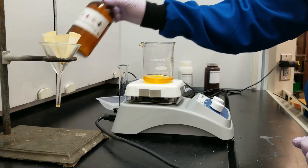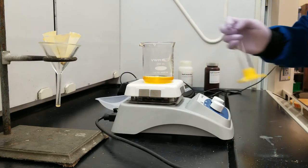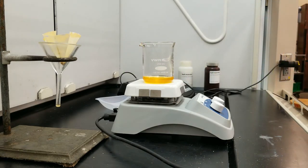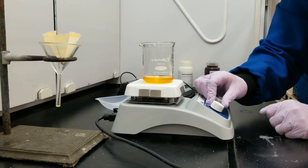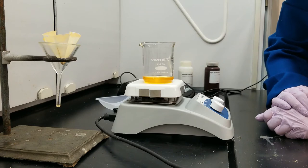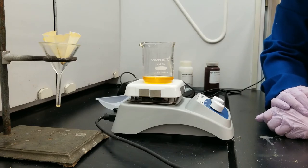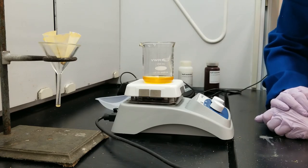Also, because hexane is very volatile, I'm going to take my reagent bottle away from my hot plate to decrease risk. So I'm going to turn on my hot plate and I'm going to dissolve this down so that the hexane is gone and all I have left is the fats.